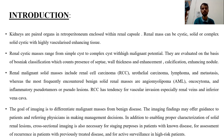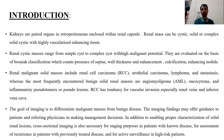Renal malignant solid masses include RCC (renal cell carcinoma), urothelial carcinoma, lymphomas, and metastases, whereas the most common benign solid masses include angiomyolipomas, oncocytomas, inflammatory pseudotumors, and vascular lesions. RCC has a tendency to invade the renal veins and inferior vena cava. Imaging is needed to differentiate between benign and malignant masses, guides management decisions, helps characterize solid lesions, and is very important for staging and surveillance of high-risk patients.